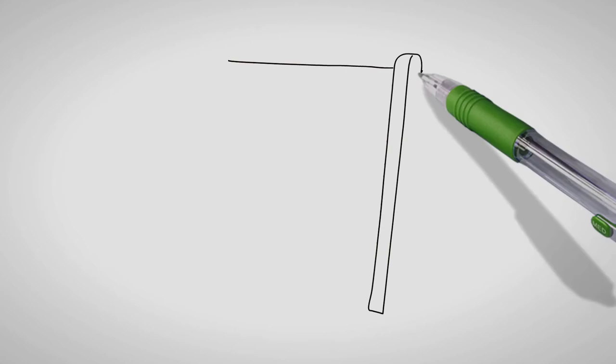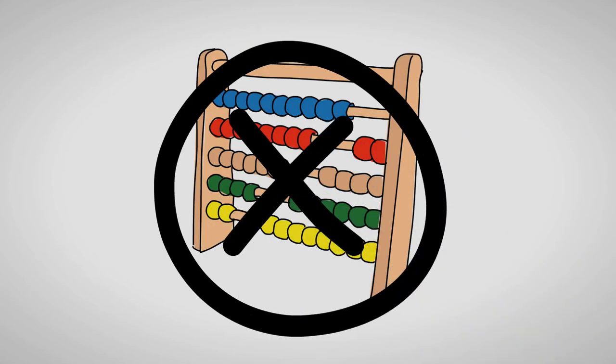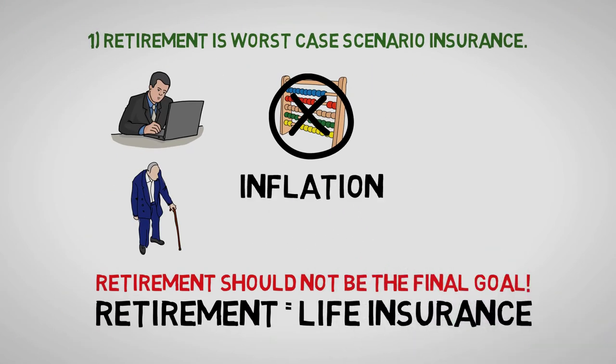Secondly, building up enough capital to sustain a retirement that is above poverty level is mathematically impossible for most people. Inflation lowers your purchasing power 2-4% every single year. The math usually just doesn't work out.